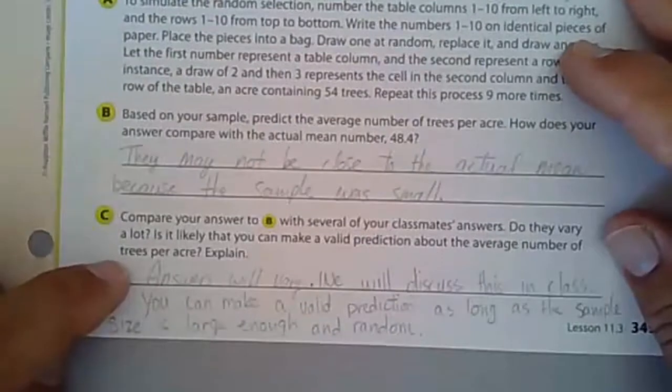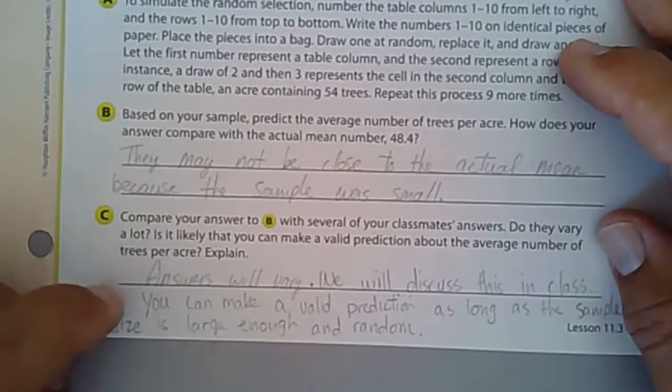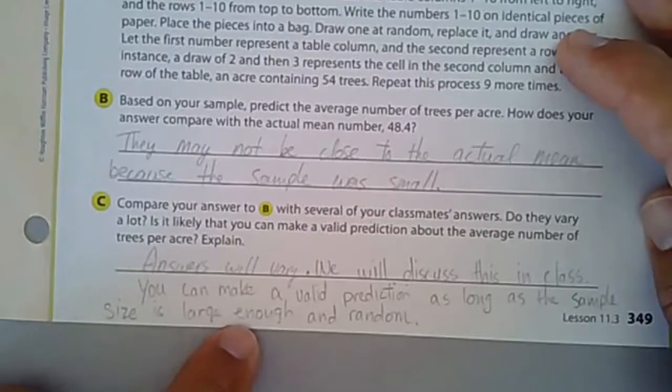Well, I know the answers are going to vary quite a bit. They likely will. We will discuss this in class. The statement here, my explanation is: you can make a valid prediction as long as the sample size is large enough and it has to continue to be random.